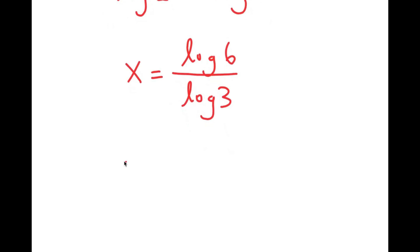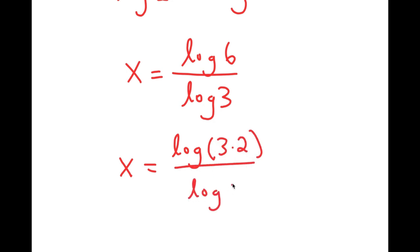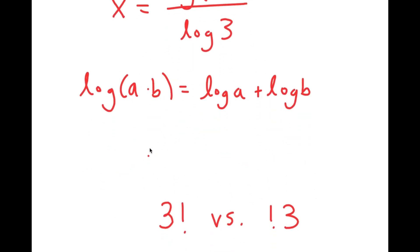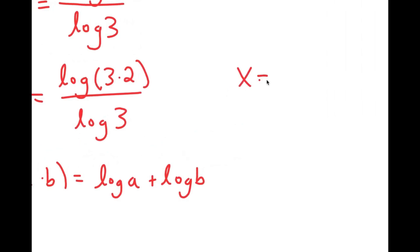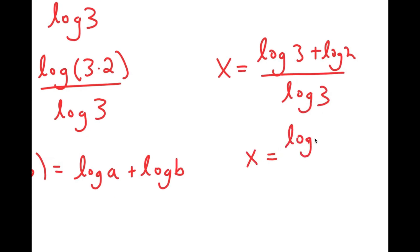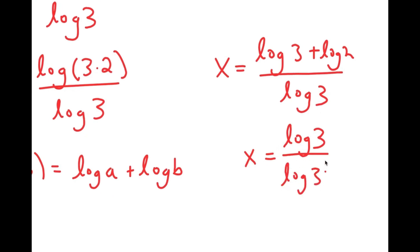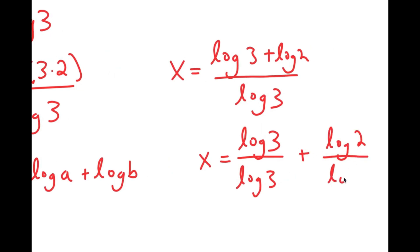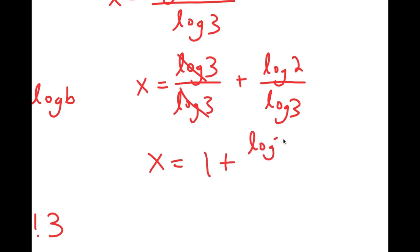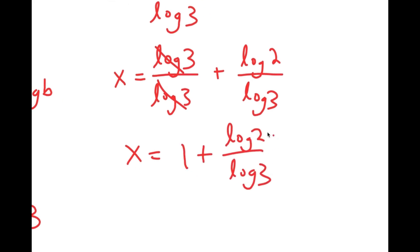Now, log(6) is the same thing as log(3 times 2). Using the product rule — log(a times b) equals log(a) plus log(b) — log(3 times 2) becomes log(3) plus log(2). So x equals (log(3) plus log(2)) over log(3), which splits into log(3)/log(3) plus log(2)/log(3). Those first two cancel out, giving x equals 1 plus log(2) over log(3). That is my final answer.